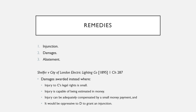Lastly, we're looking at remedies. With nuisances you want to get rid of them, so the most likely thing you'll want is an injunction. Damages are awarded in lieu of an injunction in certain circumstances, as shown in Shelfer: where the injury to the claimant's legal rights is very small, the injury is capable of being estimated in money, the injury can be adequately compensated by a small money payment, and it would be oppressive to the defendant to grant the injunction. Lastly there's abatement — self-help remedies. For example, if there's a light from your neighbour's garden shining in your window, a self-help remedy would be to go and buy blackout blinds.